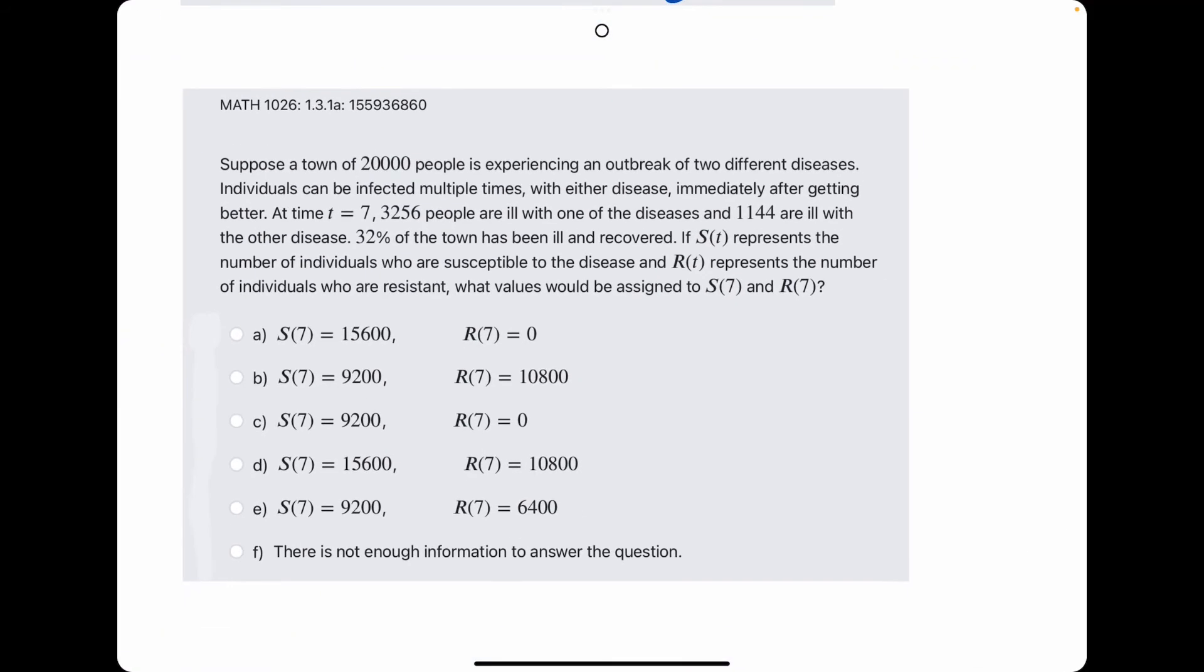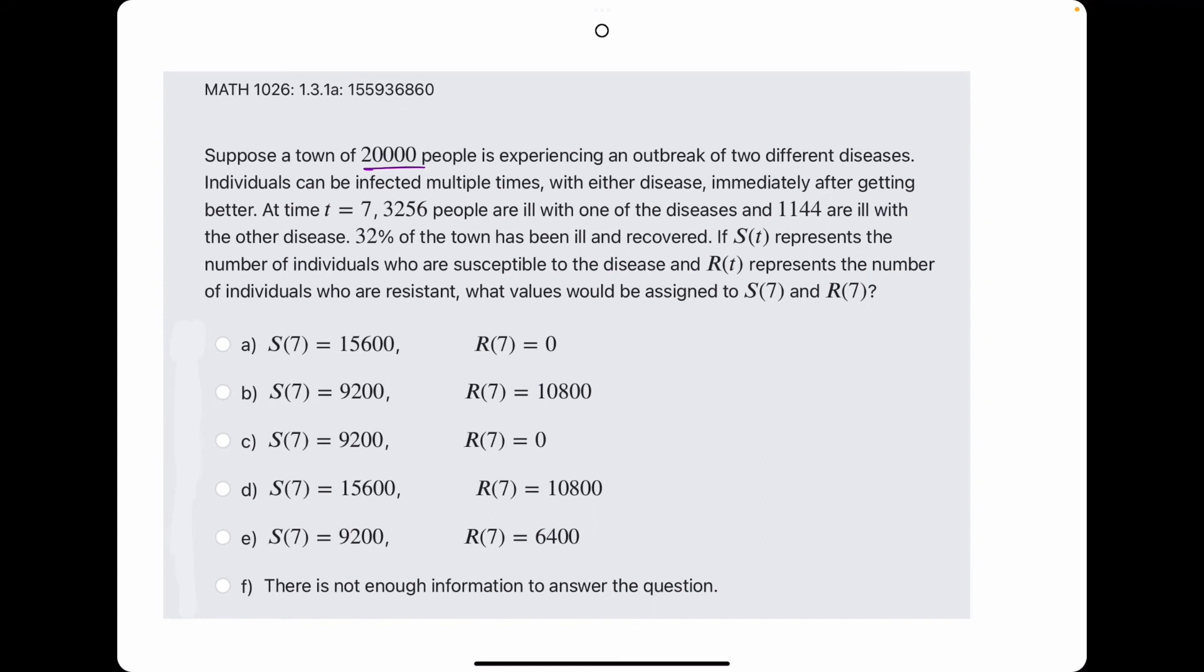Alright, example number four. We are starting with 20,000 people. There's two different diseases but they can be infected multiple times. So, because they can be infected multiple times, the R value, that represents the number of individuals who are resistant, must be zero because nobody is resistant to this disease if they can get it multiple times, if they can be infected multiple times. So, we eliminate all the options where R is not equal to zero.